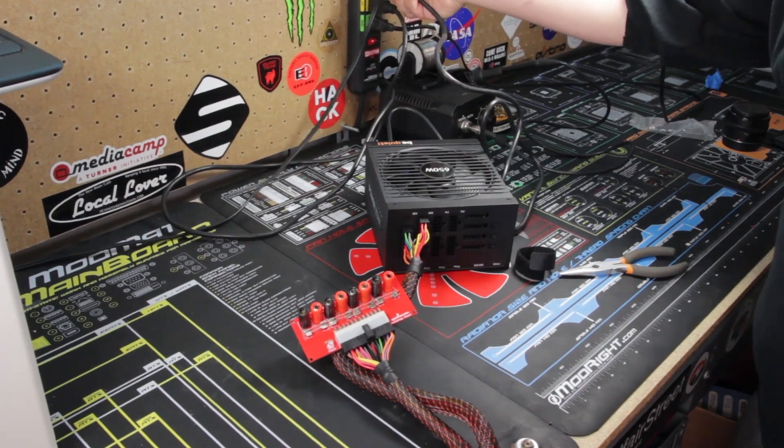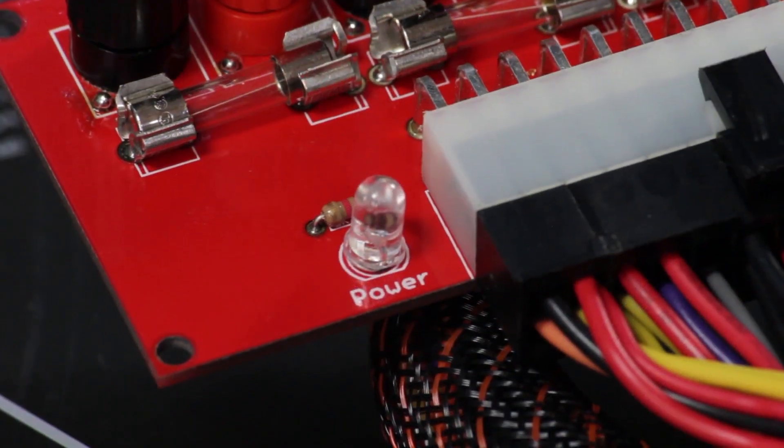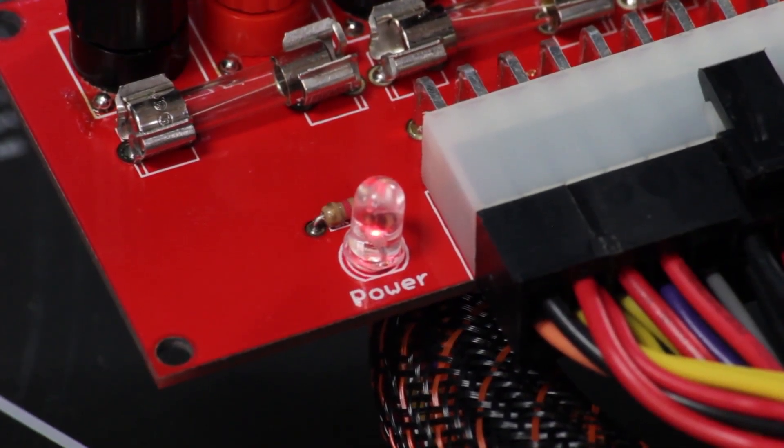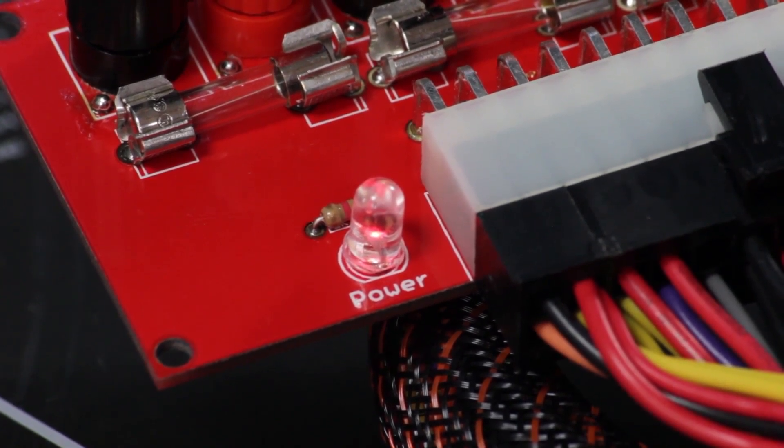With everything connected, reach around to the back of the PSU and flip its power switch to the on position. If everything was soldered correctly, the LED should light up and we can move on to testing.